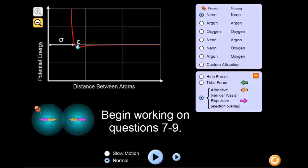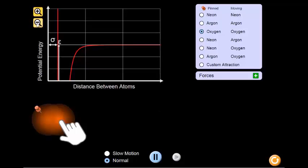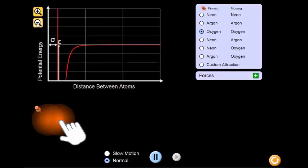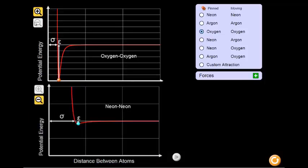Now that we've taken a look at two neon atoms, we'll take a look at two oxygen atoms. Since the oxygen graph actually exceeds the scale of the graph we had before, we'll zoom out on it so the whole picture can be seen. What differences do you notice between the graphs of the two different atoms?